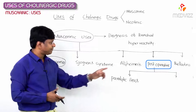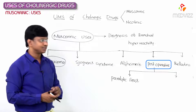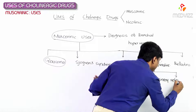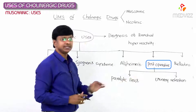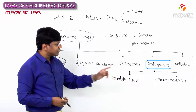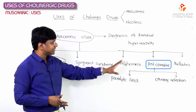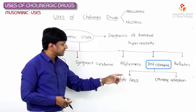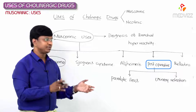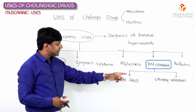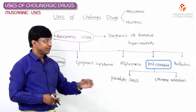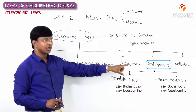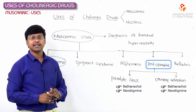The other post-operative condition where cholinergic drugs are used is urinary retention. In the post-operative state there is paralysis of the detrusor muscle, causing urinary retention. To restore urinary bladder activity, the drugs used are bethanechol and neostigmine. So for both paralytic ileus and urinary retention, bethanechol and neostigmine are used.